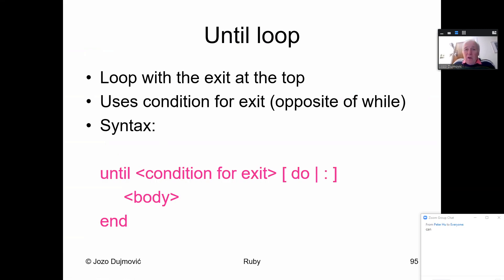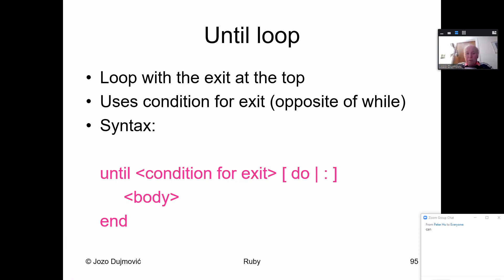Now let us speak about loops. The until loop is the same as in all procedural languages — you loop until you have a condition for exit, which tells you when to finish the loop. You can have do or a new line. If you want all statements on a single line, use do. If you have multiple lines in the body, you don't need do, but until and end must be present.